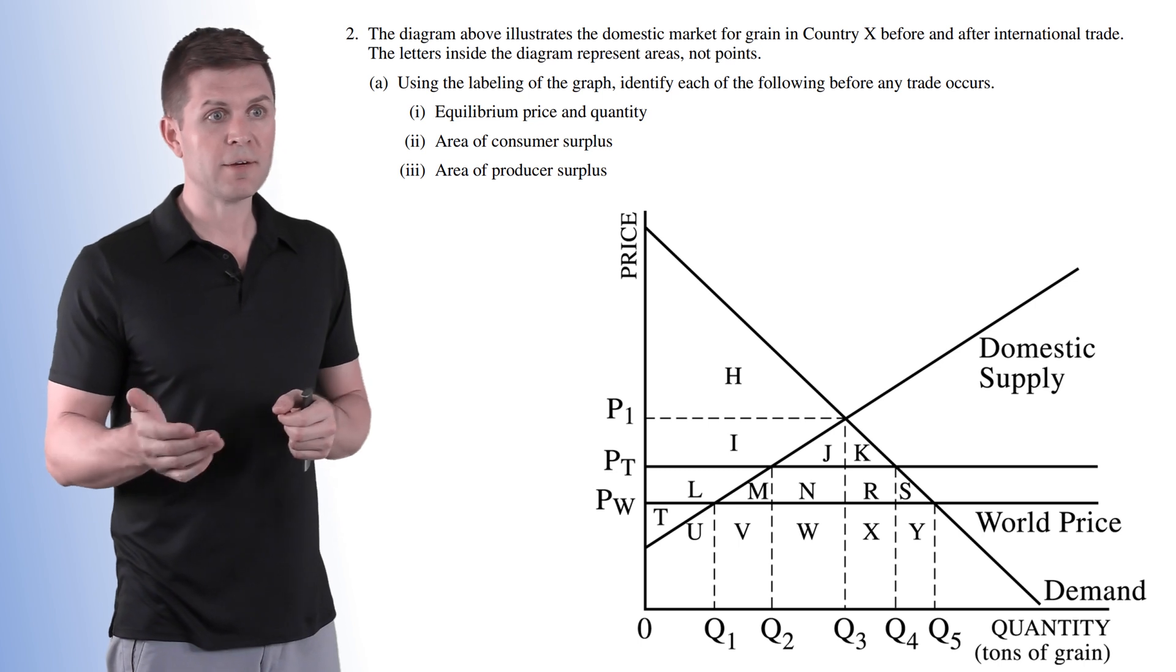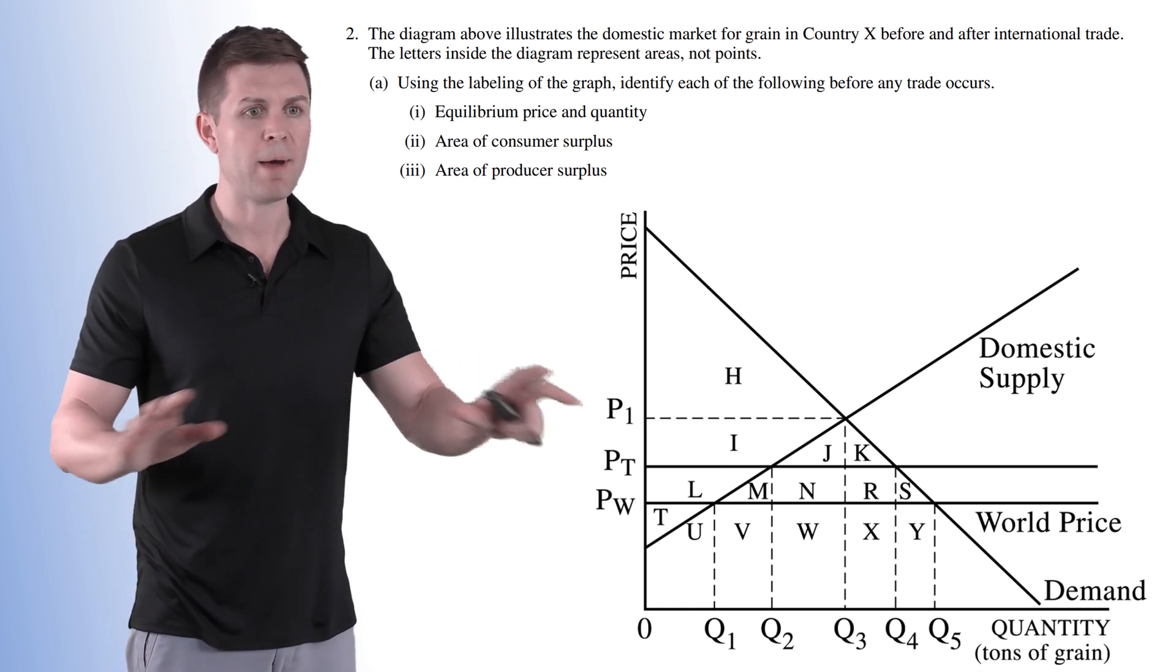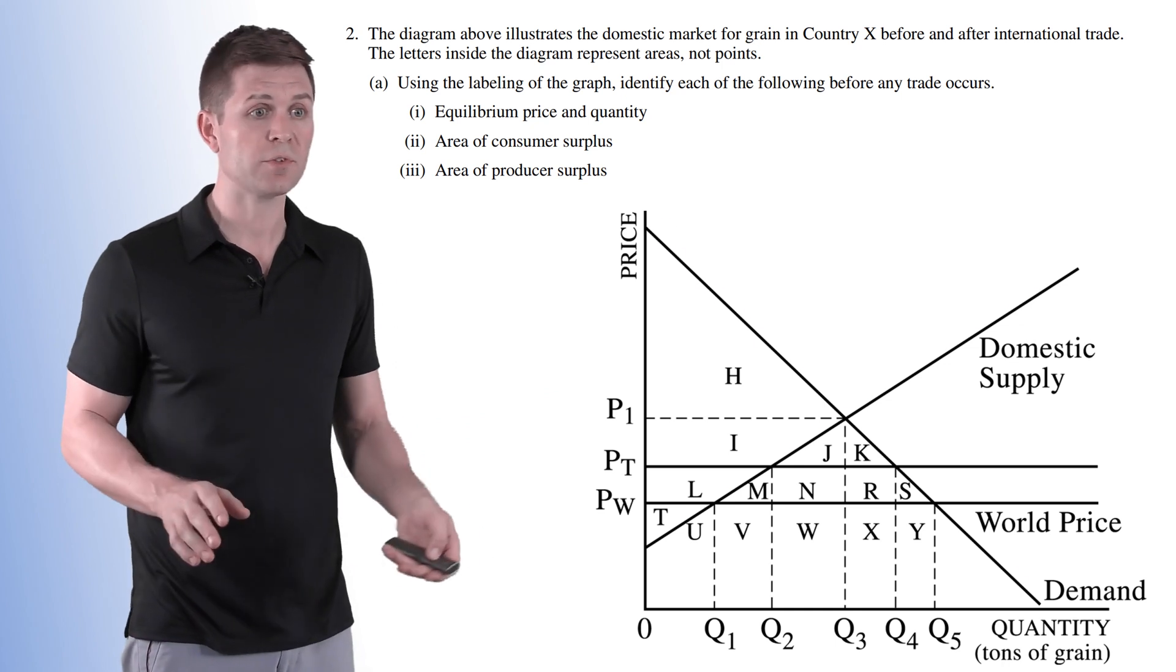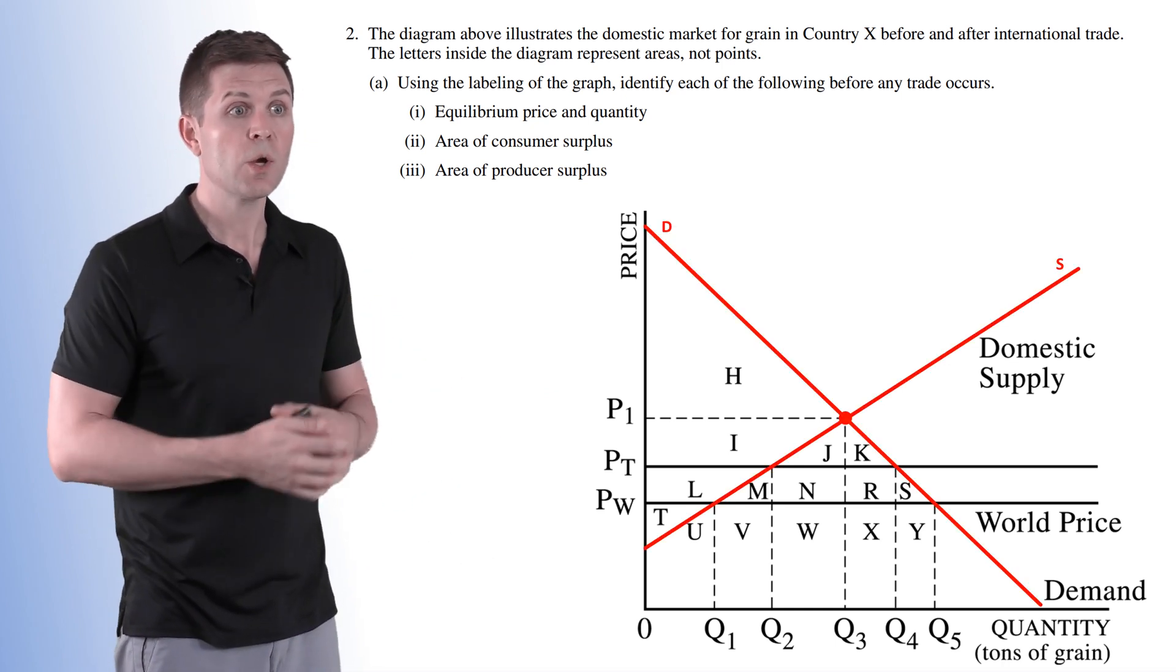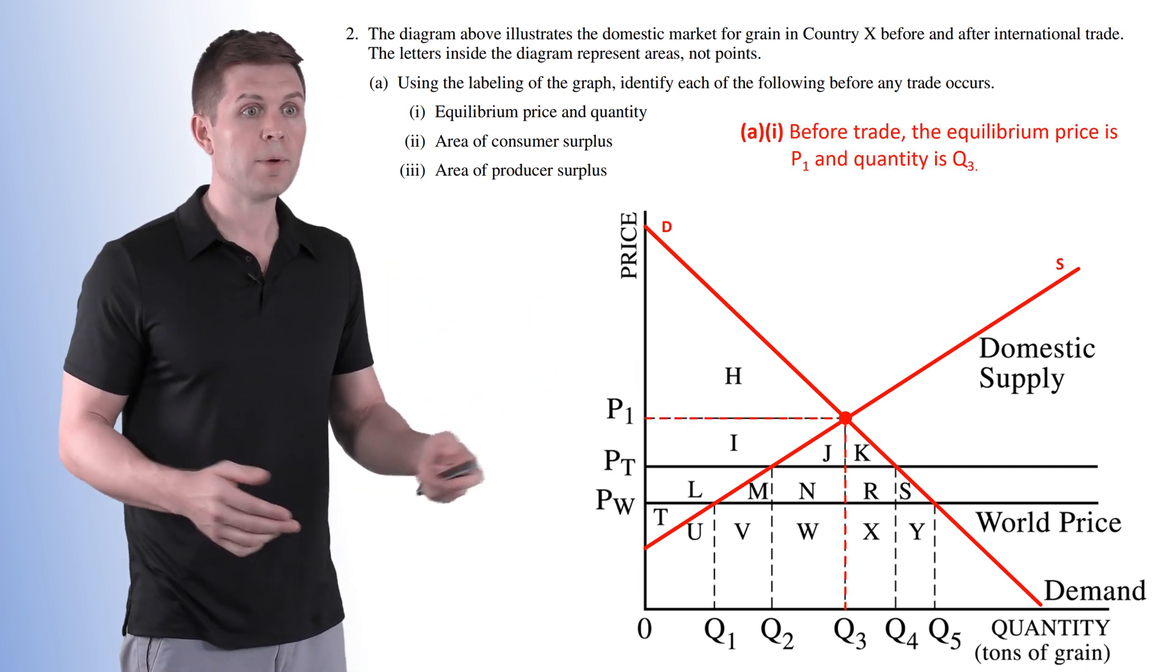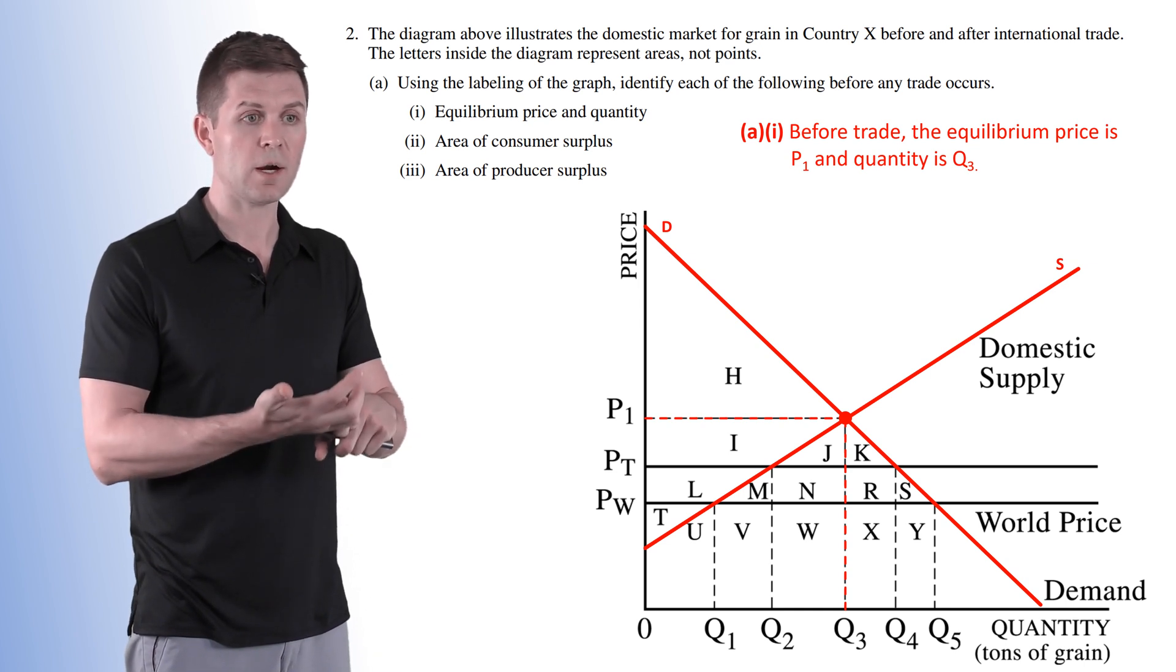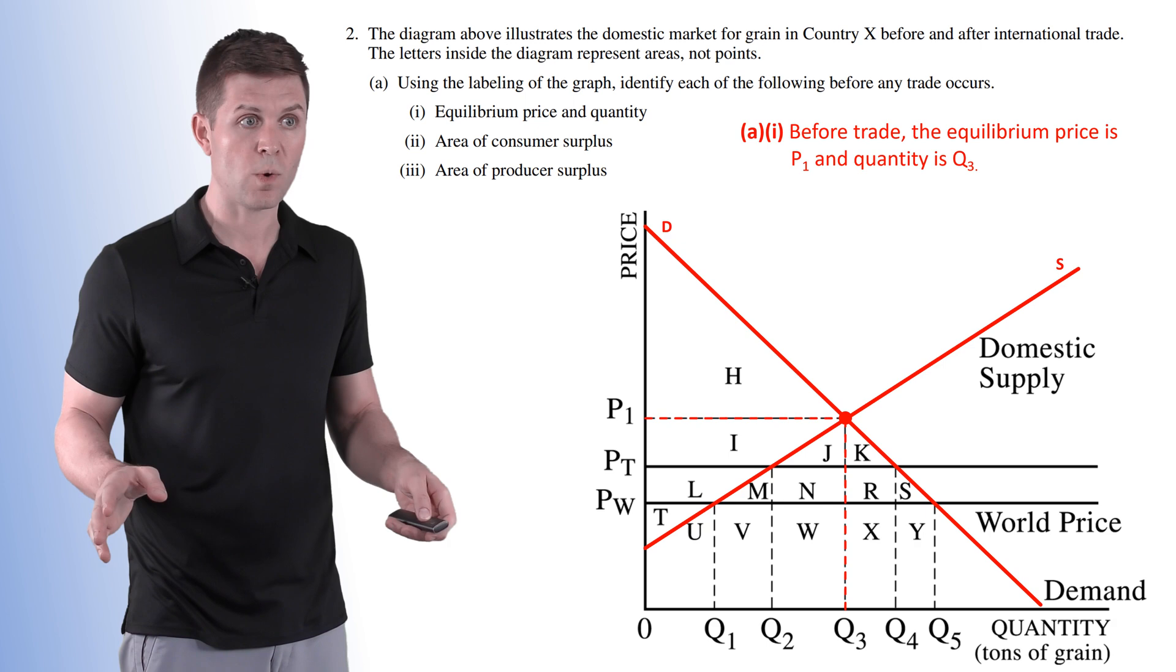Using the labeling of the graph, identify each of the following before any trade occurs. So we're looking at a domestic market here. The only two curves that really matter at this point are the demand curve and the domestic supply curve. We want to find equilibrium price and quantity. We find our equilibrium.